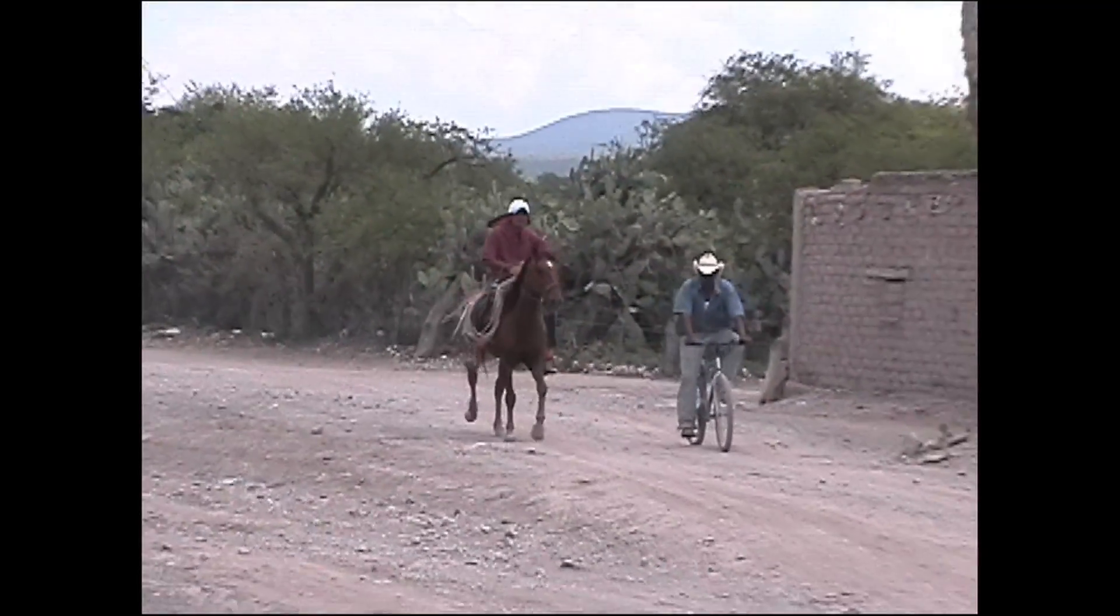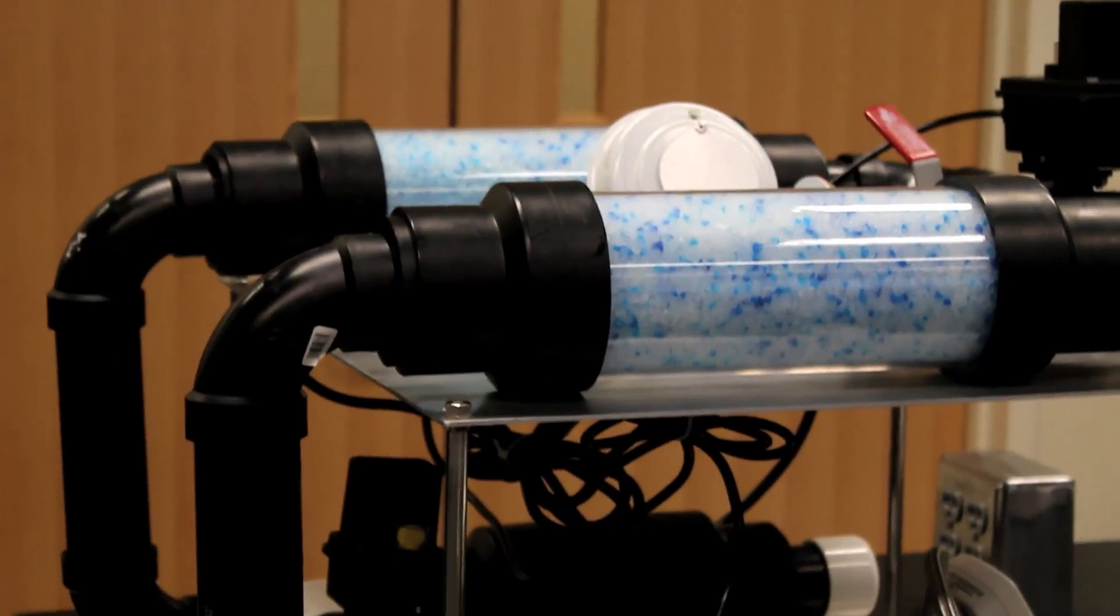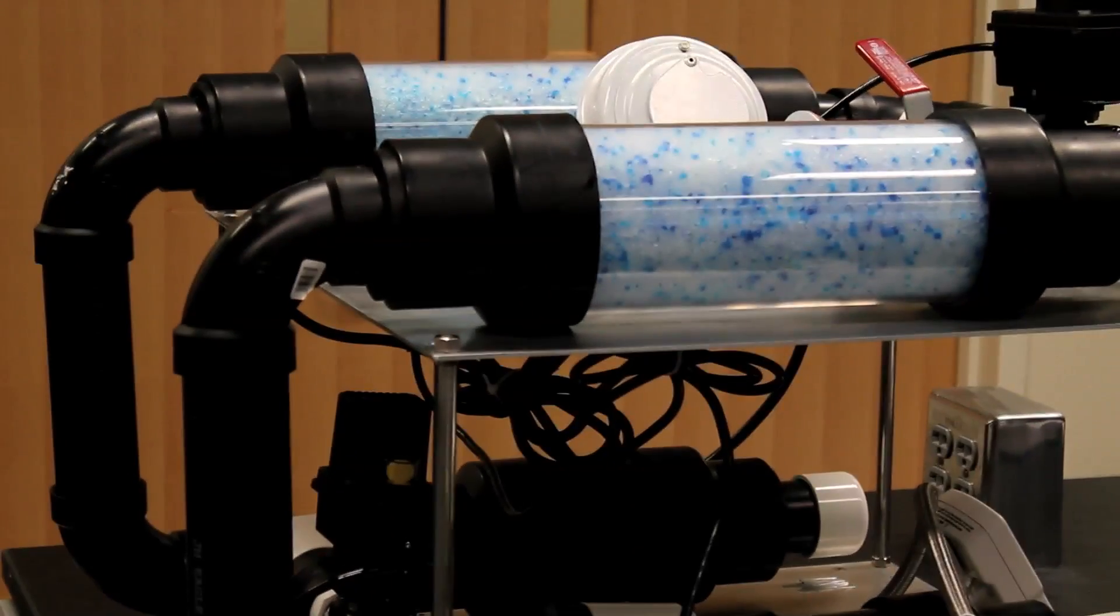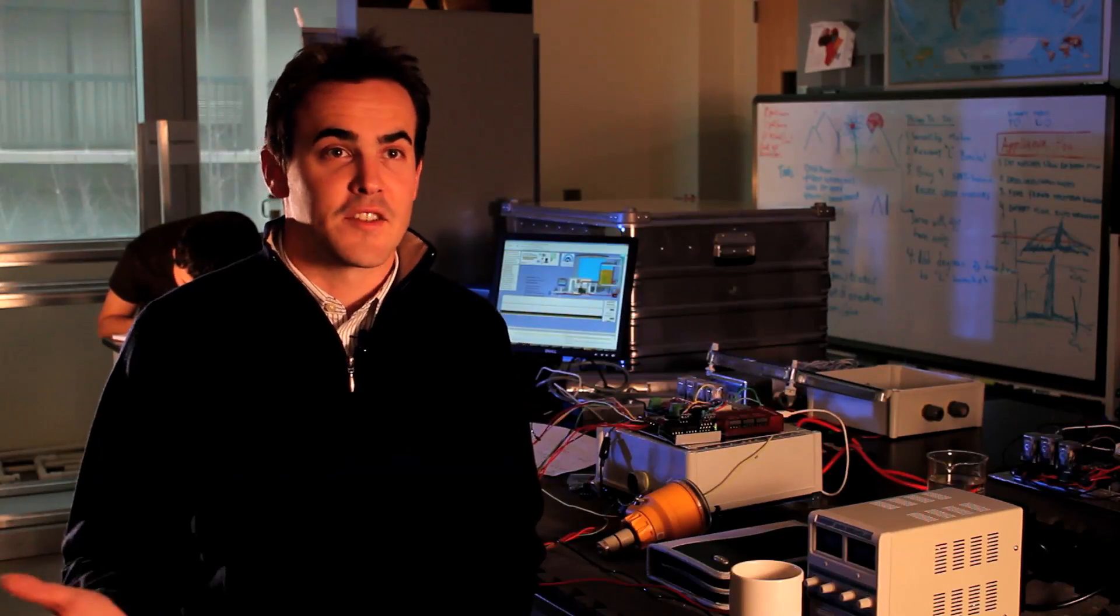So for example, we have an oxygen concentrator system we're developing that provides 40% oxygen to a remote developing world hospital. And this is not nearly the 99% oxygen that you'll get at a hospital here in Portland, but we're able to do it for a tenth or even a hundredth of the cost. And 40% oxygen for a patient is way better than the 20% they have normally when that hospital is not going to be able to afford the $100,000 machine.